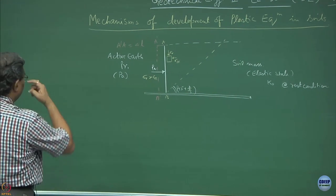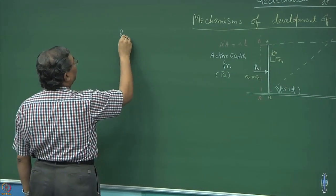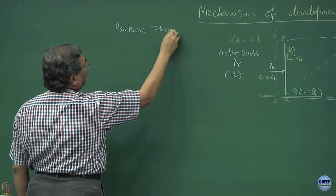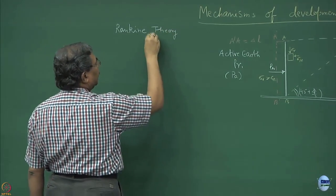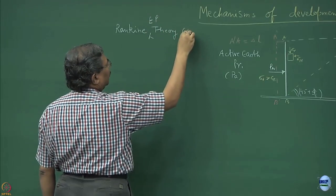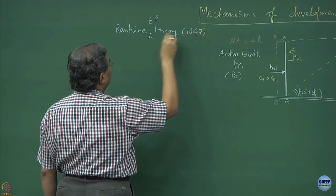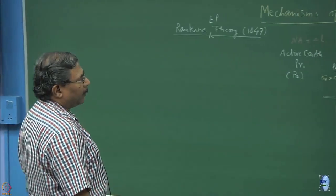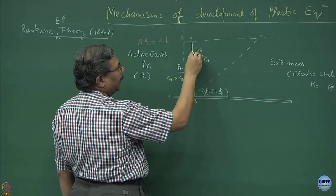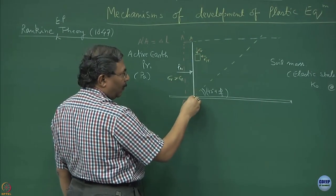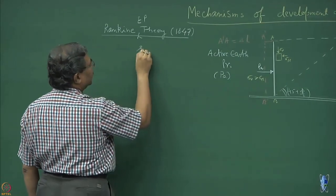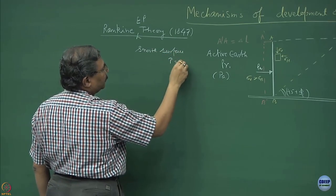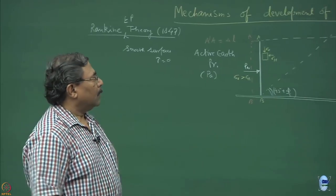This theory was given by a person known as Rankine, and we call it the Rankine earth pressure theory. This was in 1847 — long, long back — where what he assumed is that the shear force acting between the element and the hypothetical wall is zero, meaning a smooth surface. So there is no shear force acting between the content.